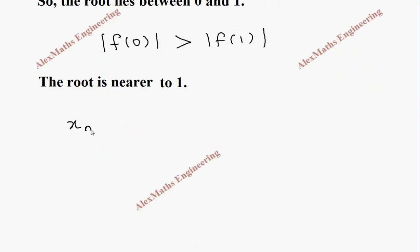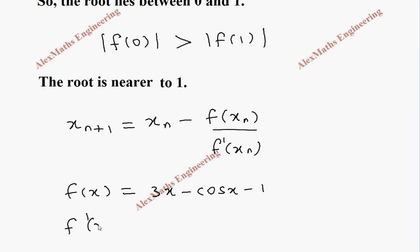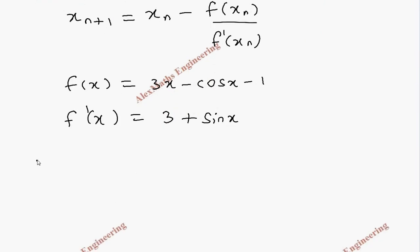So we are going to take x0 = 1. Now we apply Newton-Raphson's formula: x(n+1) = x(n) minus f(x(n)) divided by f'(x(n)). We already know f(x) = 3x minus cos x minus 1. Taking the derivative, f'(x) = 3 plus sin x.